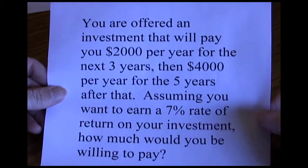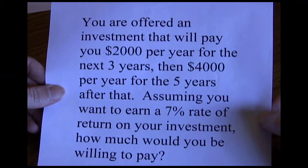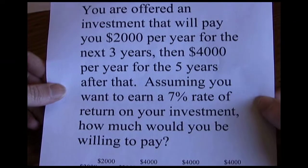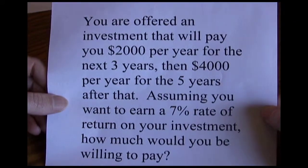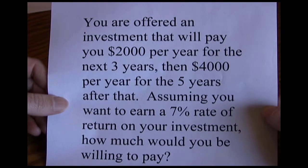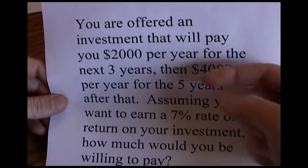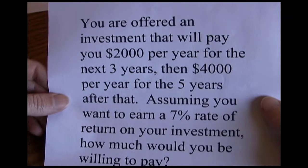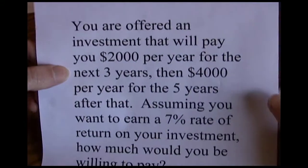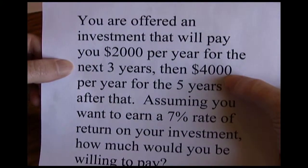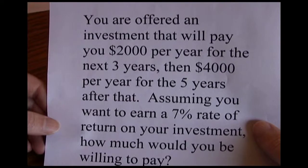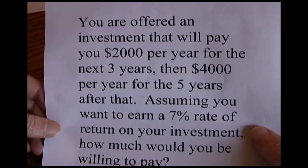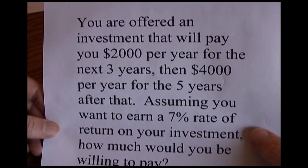You are offered an investment that will pay you $2,000 per year for the next three years, then $4,000 per year for the five years after that. Assuming you want to earn a 7% rate of return on your investment, how much would you be willing to pay? This problem looks somewhat like an annuity with the per year payments, but it's not the same cash flow stream over the entire period — $2,000 per year for three years, then $4,000 per year for five years. Because the cash flow changes, it's not an annuity. We only have an annuity when we have the same periodic cash flow over the entire time period. Instead, what we have here is something called an uneven cash flow stream.